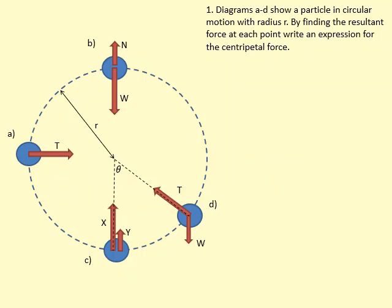In this diagram we have four situations A, B, C, and D, with the object moving in circular motion around this center, and we have to find an expression for the centripetal force.